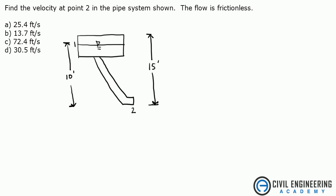Hi, welcome to Civil Engineering Academy. I'm going to be working a problem from Water Resources. The problem states: find the velocity at point 2 in the pipe system shown.